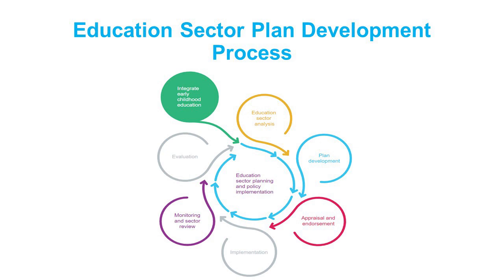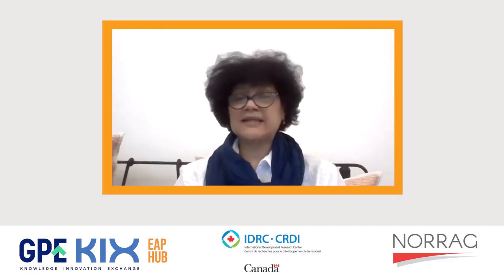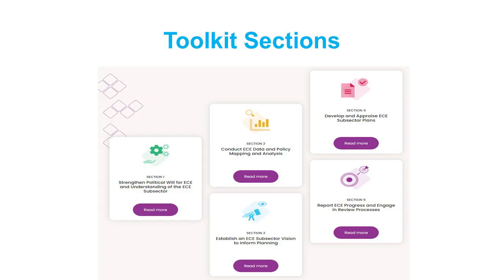The toolkit typically follows the journey of milestones — related actions that are common across countries as they go through sector planning and system strengthening efforts. However, users can also follow an iterative process, revisiting and repeating steps and actions as needed for their contexts.